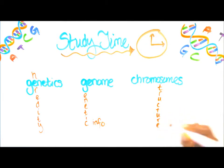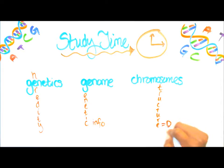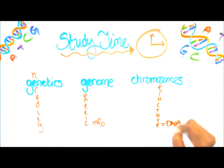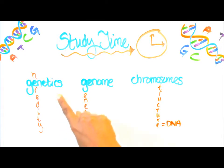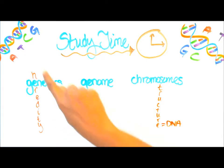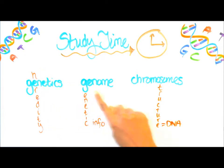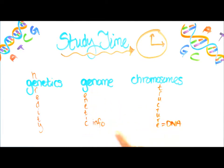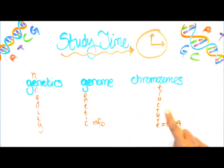Chromosomes: structure containing DNA. So we have genetics — heredity; genome — genetic info; chromosomes — structure containing DNA.